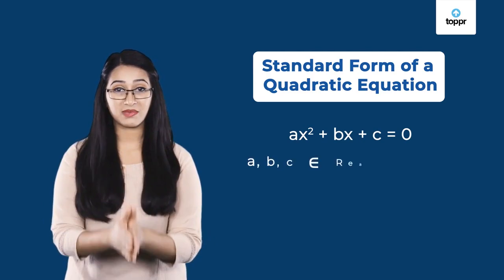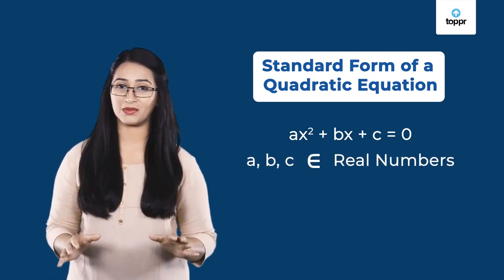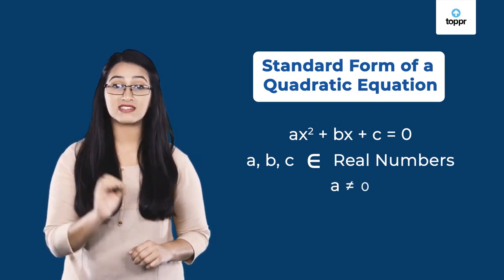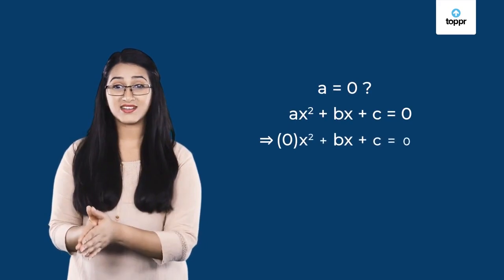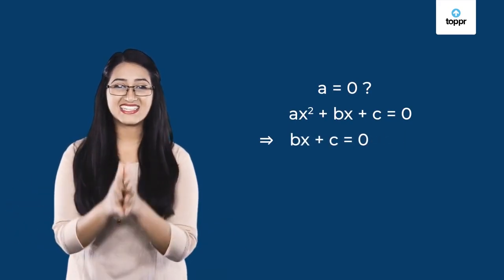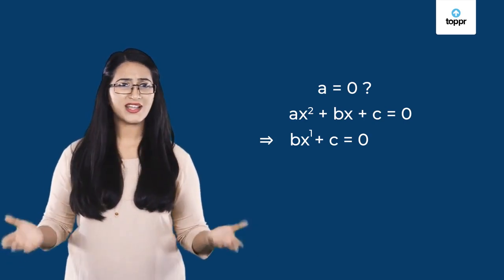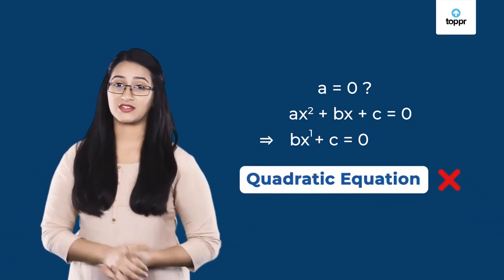Here, A, B, and C are any real numbers, but A is not 0. But why can't A be 0? Because if A equals 0, the X² term would vanish and the degree of the equation would become 1 — so it would no longer be a quadratic equation.